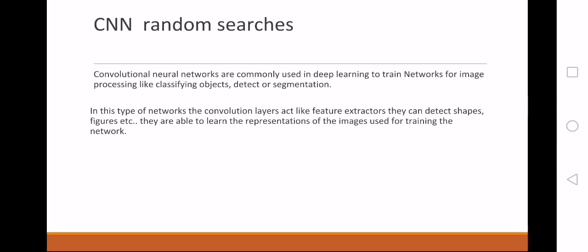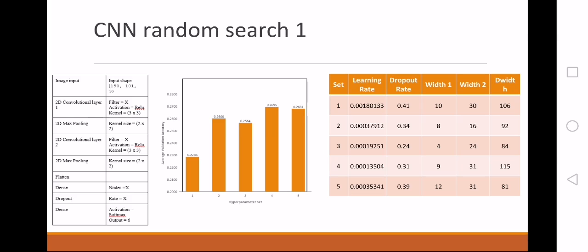We decided to use CNN convolutional layers. The convolutional layers act like feature extractors, so we did some random searches to look for parameters. You can see on the left side the architecture that we used, and we tried to optimize the learning rate, the dropout rate, the width which is the filter of the first convolution, and the nodes of the dense layer.